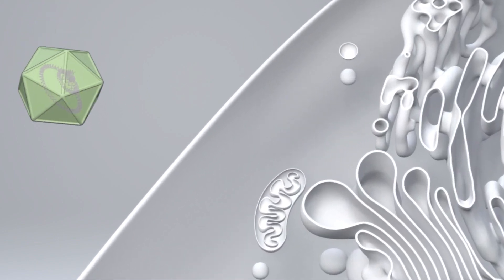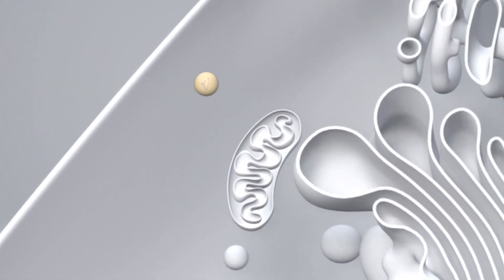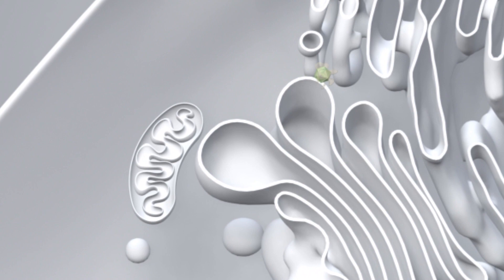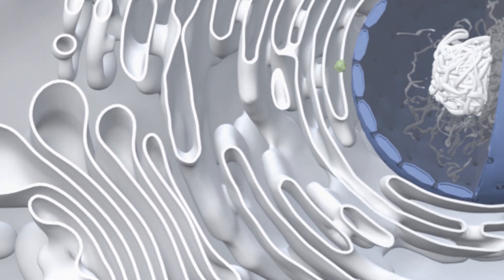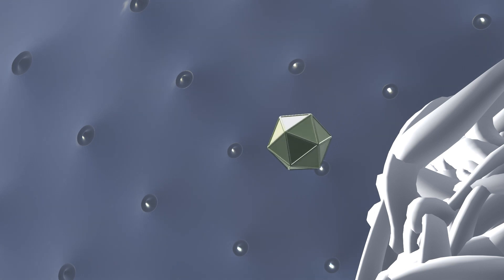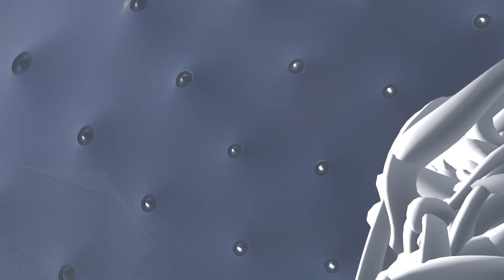Once inside the body, the vectors travel to the muscle cells. The vectors enter the cells through the cell membrane. Then the vector travels to the nucleus of the muscle cell and leaves the new functional gene inside the nucleus.